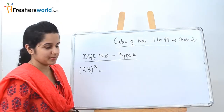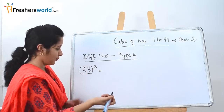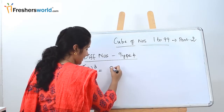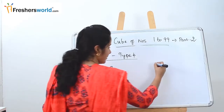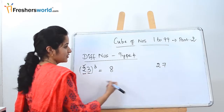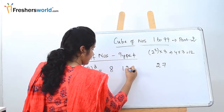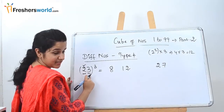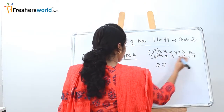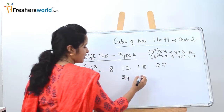Type 4 is different numbers — for example, 23 cubed, where the units and tens digits are different. First, cube the first digit: 2 cubed = 8, write on the left. Then cube the second digit: 3 cubed = 27, write on the right. For the middle positions: square the first digit and multiply by the second — 2 squared × 3 = 4 × 3 = 12. Then square the second and multiply by the first — 3 squared × 2 = 9 × 2 = 18. Now multiply the middle two digits by 2: 12 × 2 = 24 and 18 × 2 = 36.